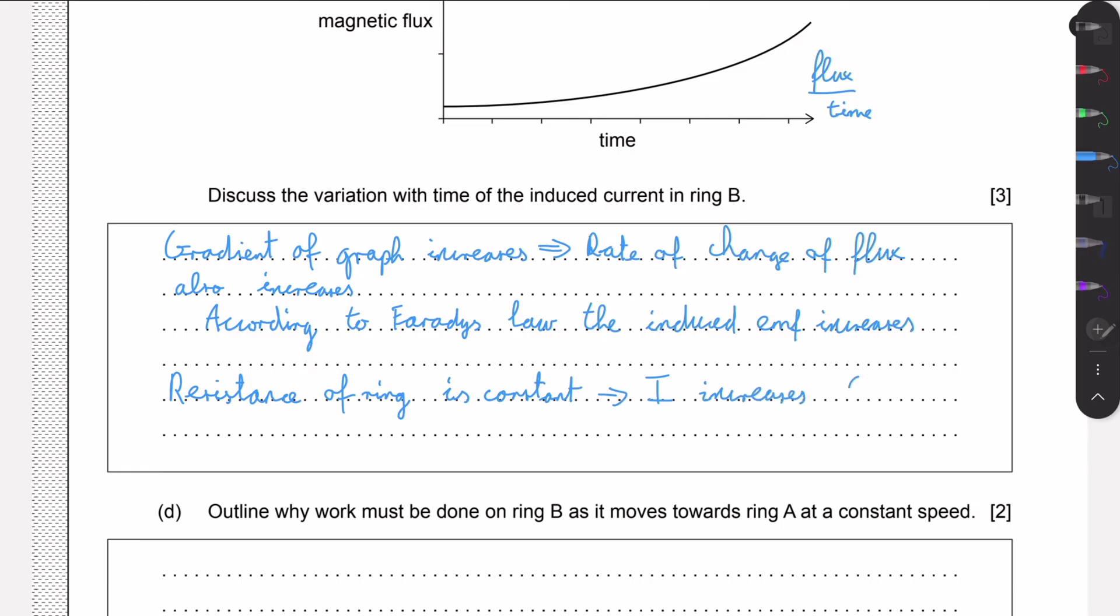And the resistance of our wire is constant. So if we have a larger EMF being induced, that must mean we have a larger current. So current increases as well. As we know the formula V equals IR. R is just a constant, if V increases, I also increases.